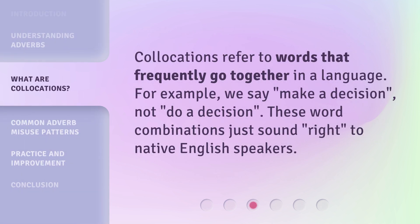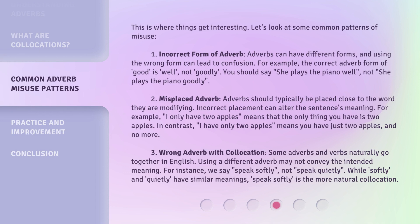Collocations refer to words that frequently go together in a language. For example, we say 'make a decision,' not 'do a decision.' These word combinations just sound right to native English speakers. This is where things get interesting — let's look at some common patterns of misuse.